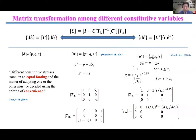In constitutive modeling of unsaturated soil, one of the key issues is the choice of proper constitutive variables. Many constitutive variables have been proposed in the literature. According to Professor Antonio Gens and his co-author, different constitutive stresses stand on an equal footing, and the choice must be decided using the criteria of convenience — a view we share. In this unified state-dependent theoretical framework, net stress and matrix suction are used for simplicity. Models based on other stress state variables can be converted to the unified framework by matrix transformation.